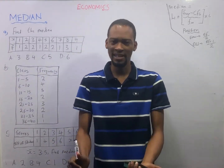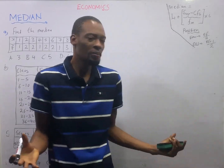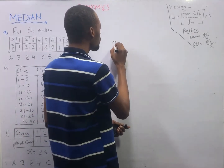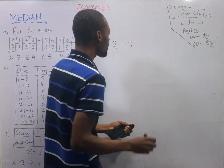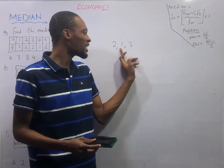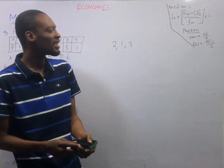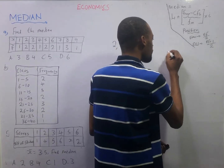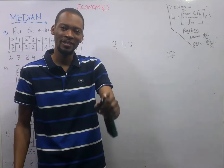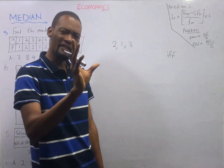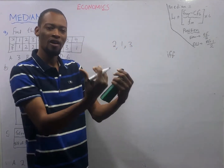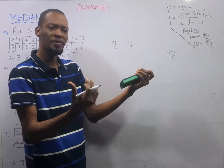Median, as the name implies, is the middle number. However, if I give you two, one, and three, you cannot just tell me that the median is one because here one is the middle number. Median is the middle number if and only if the numbers are arranged in order - either ascending order or descending order.